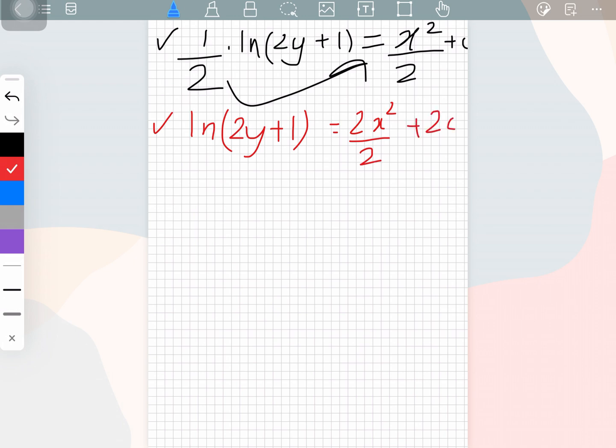So this 2 cancels this 2 and if you are to look at this term then it's a constant. We don't know what the constant is but then let's suppose this constant to be c prime. So let's substitute the value of 2c as c prime.